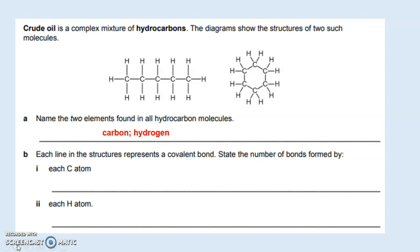Now each line in the structure, we're referring to the structures given in the question here, represents a covalent bond. State the number of bonds formed by each carbon. You could just pick up one carbon and count the number of bonds around it: one, two, three, four. So each carbon contains four bonds.